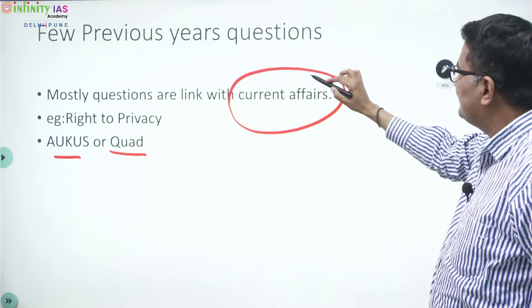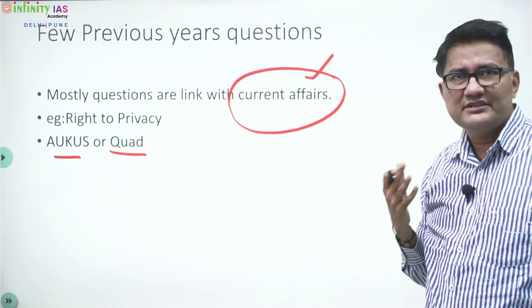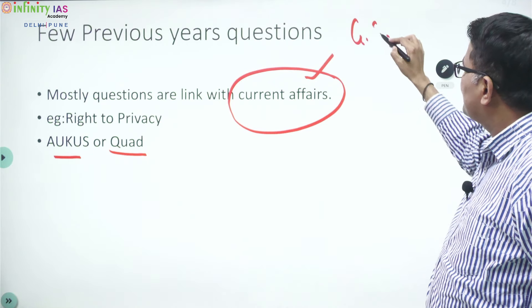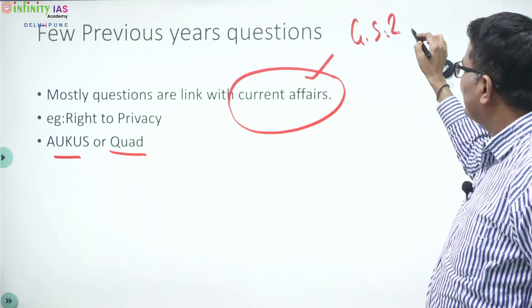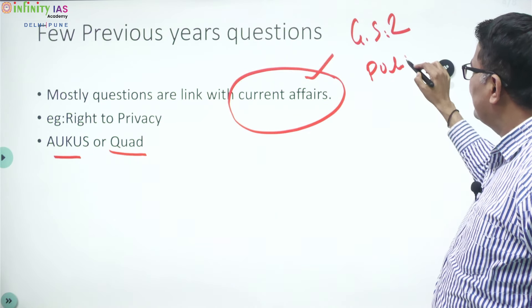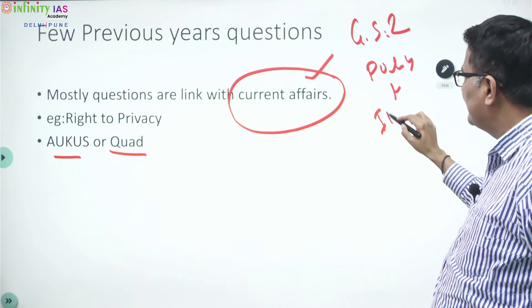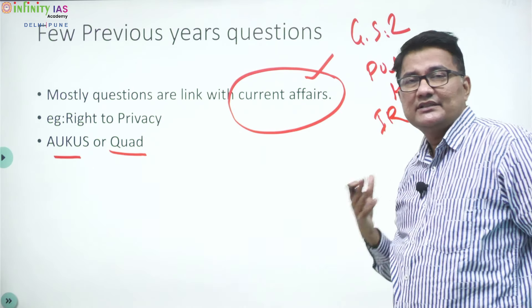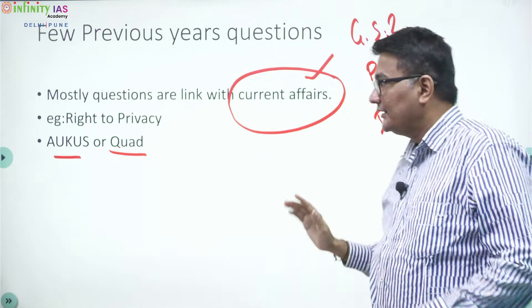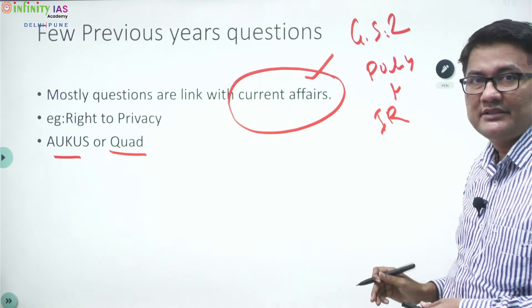What exactly are the benefits? When you are studying for political science, that itself means you are finishing most part of the GS current affairs. You are finishing GS 2, which is mostly linked with polity and international relations. Political science also helps for essay writing.